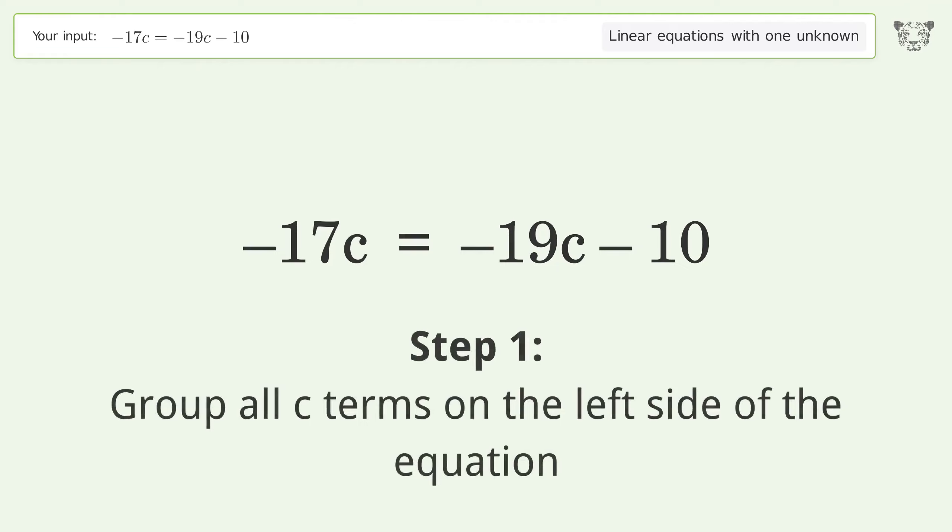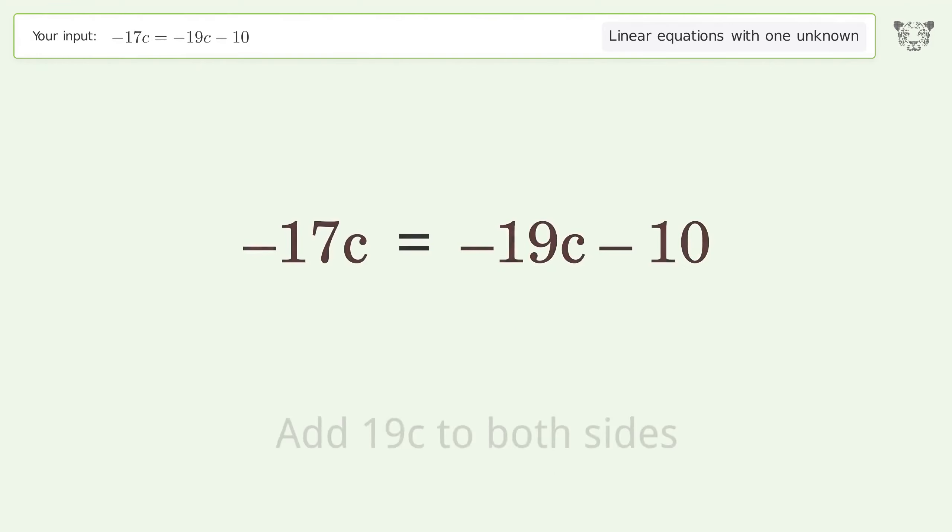Group all c terms on the left side of the equation. Add 19c to both sides.